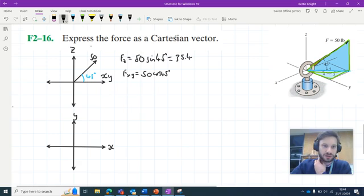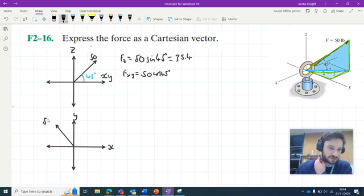So if we were to diagramatize this or add it to our axes, I should say, it would look something like this, the fxy component. So let's label its magnitude just as 50 cos 45 here.